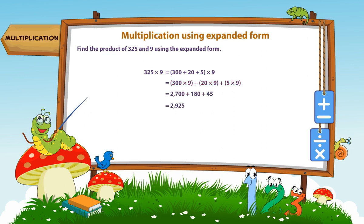Step 3: Add the products obtained. So, 325 multiplied by 9 gives 2925.